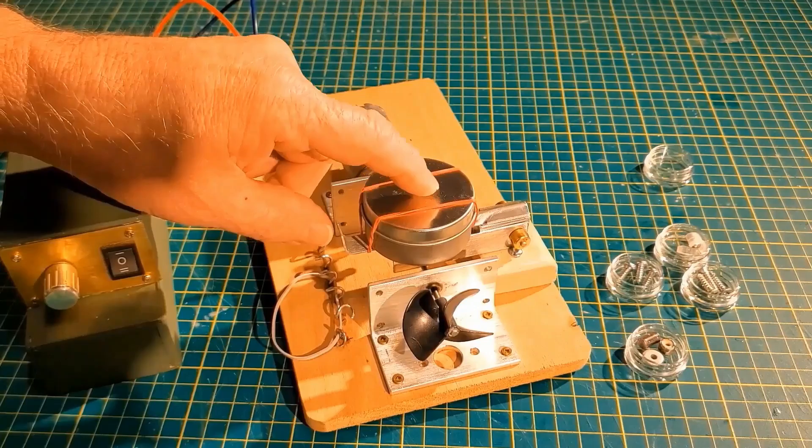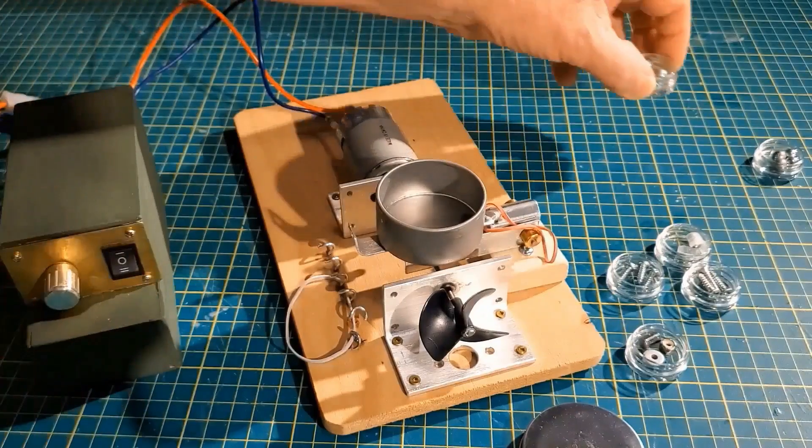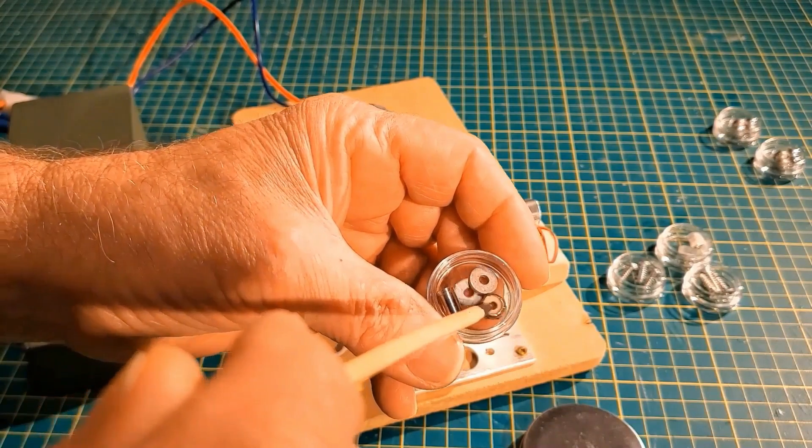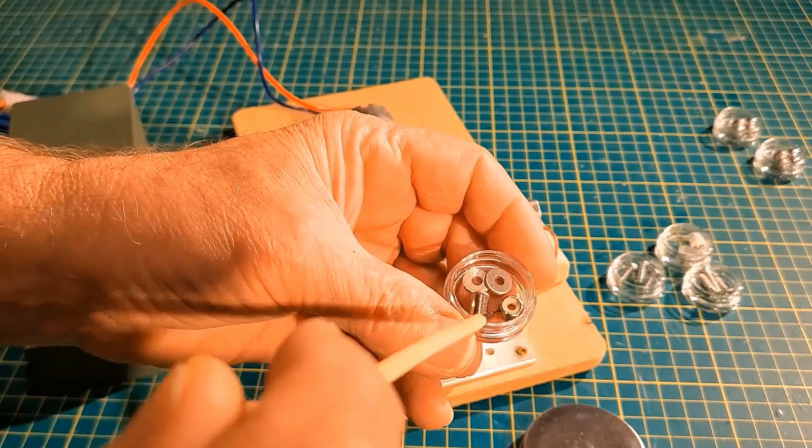So let's change the mix inside the can. This time we'll try two small washers, a three millimeter lock nut and a little piece of steel.